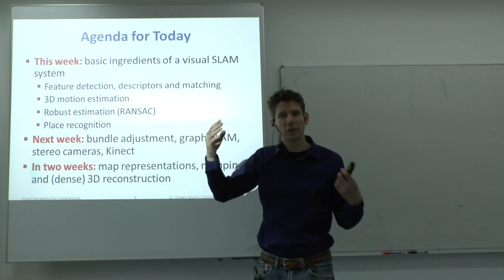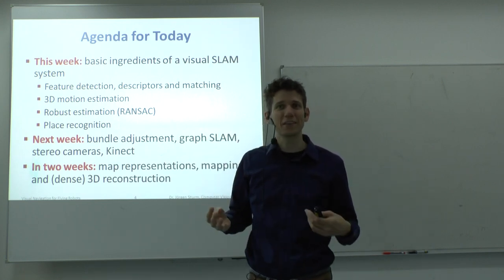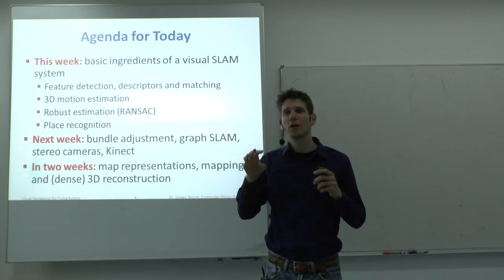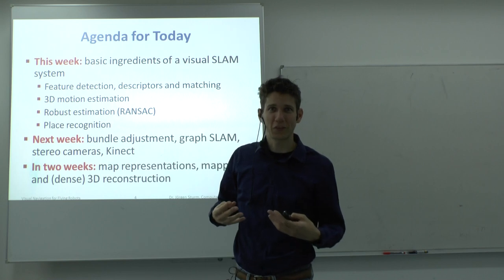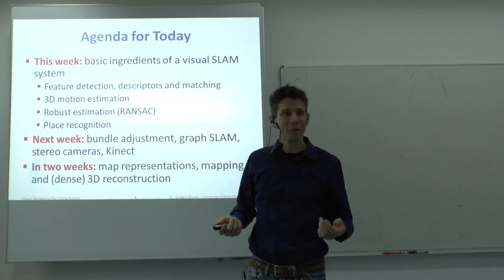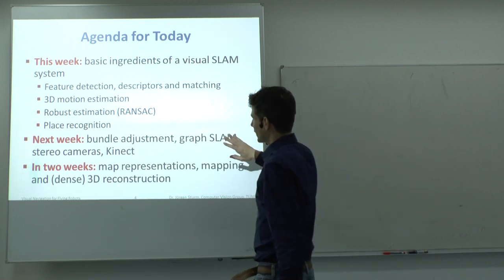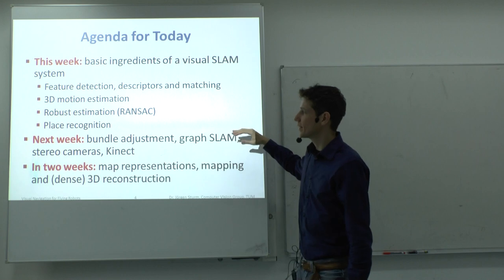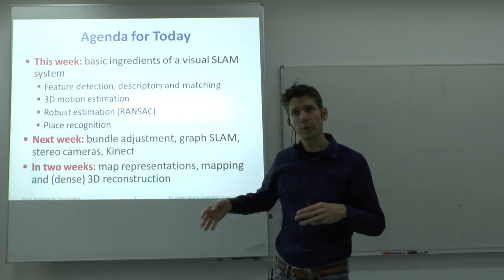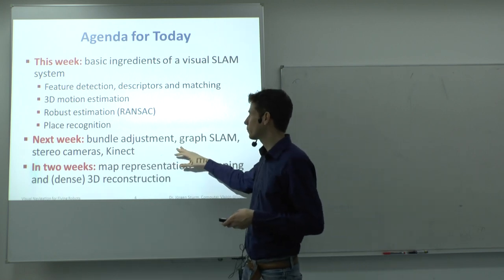Place recognition is the problem where you walk around for hundreds of meters and at some point look at the same room — how can you efficiently determine you've been there before? Or if you're an autonomous car driving hundreds of kilometers and you realize you're back home, how do you detect that efficiently? Next week we look at integrating this over multiple frames and building larger scale maps with bundle adjustment.